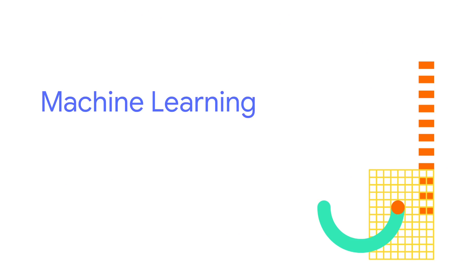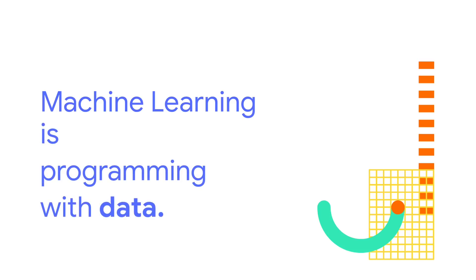Going into this, I'm going to make some broad general assumptions around base knowledge around machine learning. My short and sweet definition of machine learning is basically just programming with data, more or less. If you strip away as many details as you can and try to make something shorter than the title of this talk, this is kind of what you end up with.